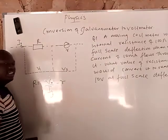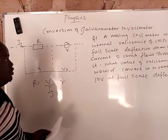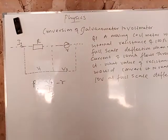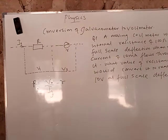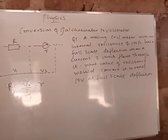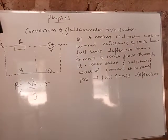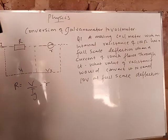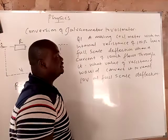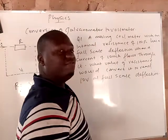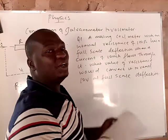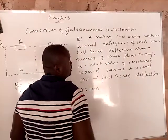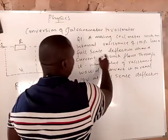Immediately we have a beautiful example here. A moving coil meter with an internal resistance of 100 ohms, so r is 100 ohms, has a full scale deflection when a current of...